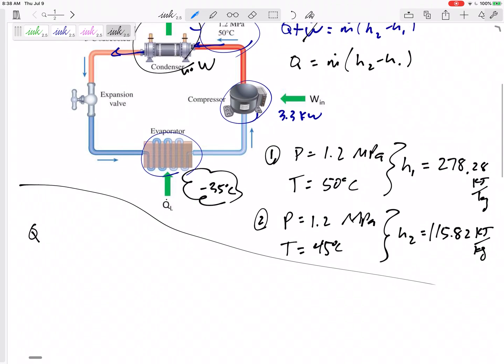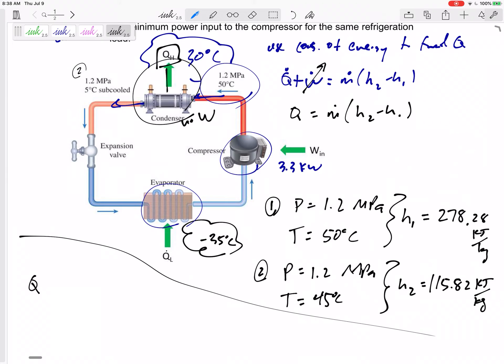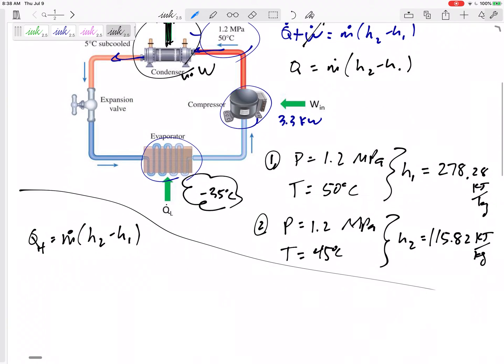So the Q, now is this QH or QL? This is QH because we're looking at the condenser here. QH is M dot change in H. QH would be 0.05 kilograms per second. Let me think about units here.